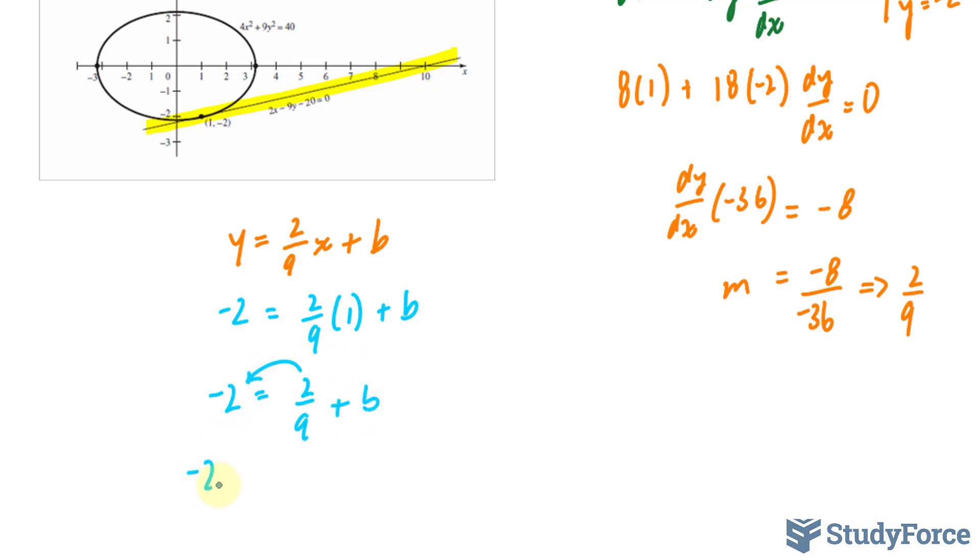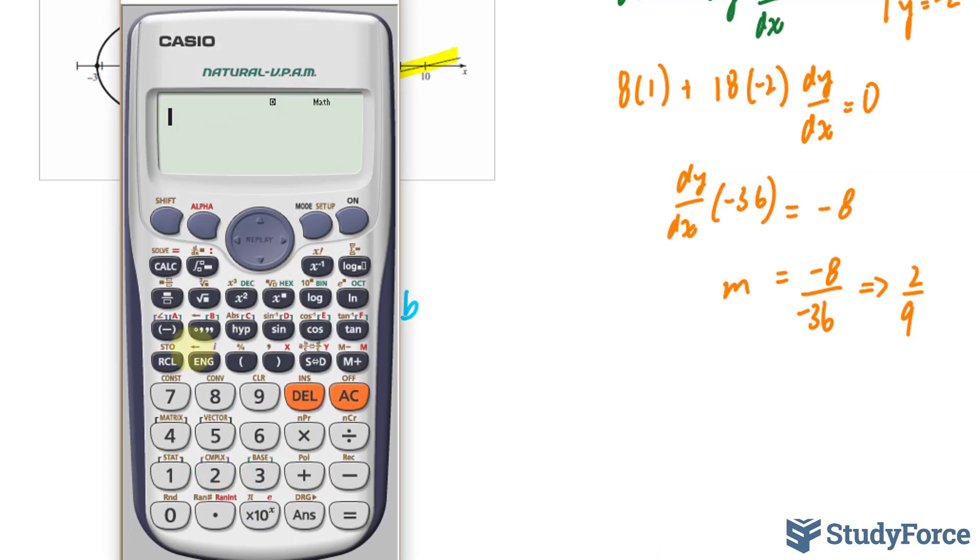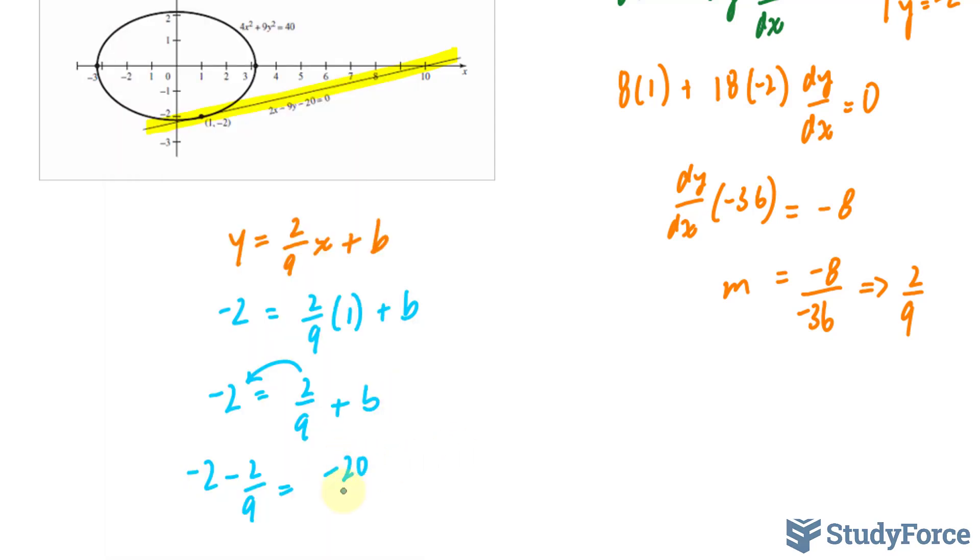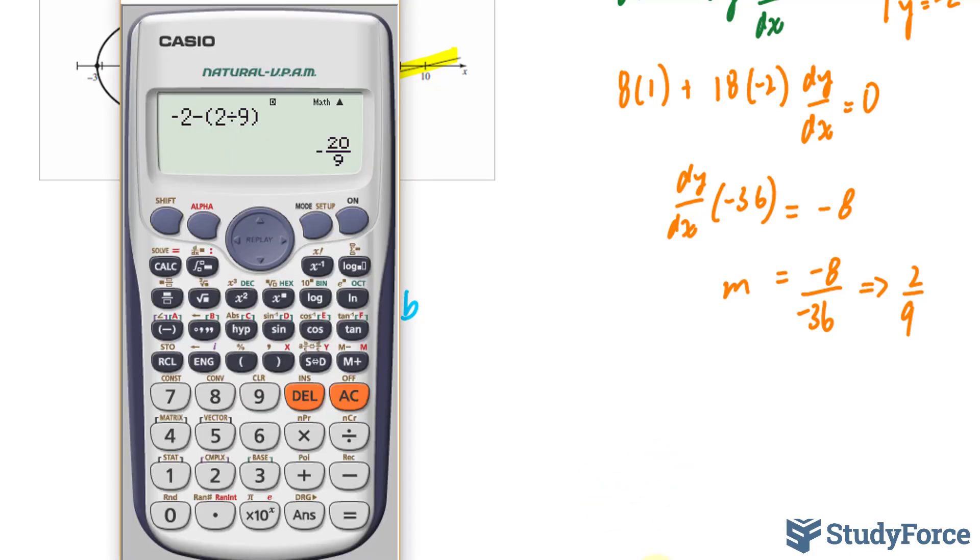Isolating for b gives us the following. I'll use my calculator for this. Negative 2 minus 2 over 9 is equal to negative 20 over 9, or in decimal, negative 2.22 repeating.